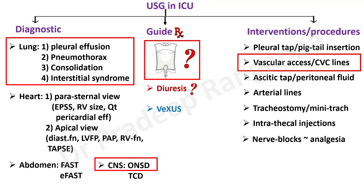For the abdomen, there's FAST and eFAST, which ER physicians use more commonly. In CNS, we do optic nerve sheath diameter and transcranial Doppler. For interventions — pleural tap, pigtail insertion, vascular access, CVC lines — today these all have to be performed under ultrasound guidance, and it's considered malpractice if any procedure is done without it. Ascitic tap, peritoneal fluid, and arterial lines can sometimes be done without ultrasound, but in difficult cases we tend to use it.